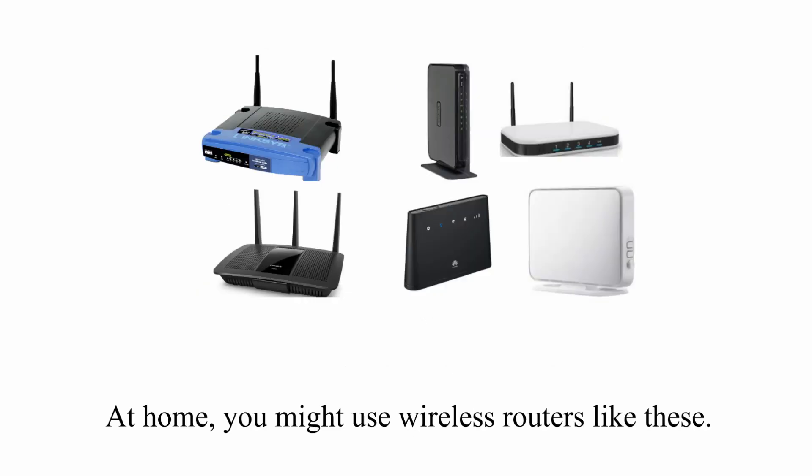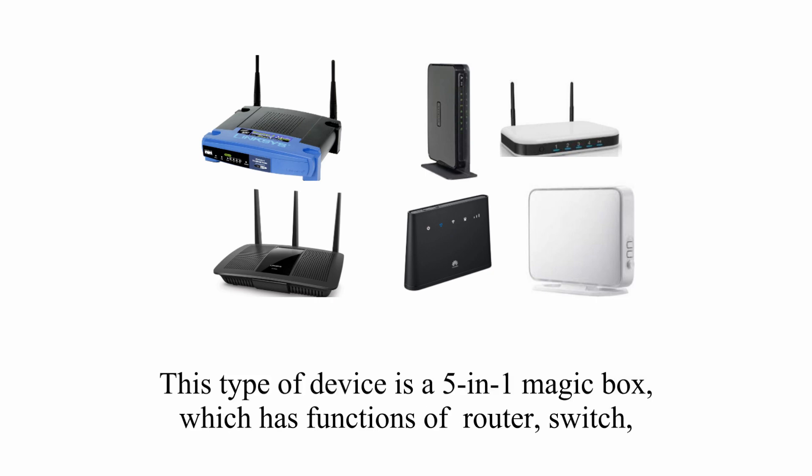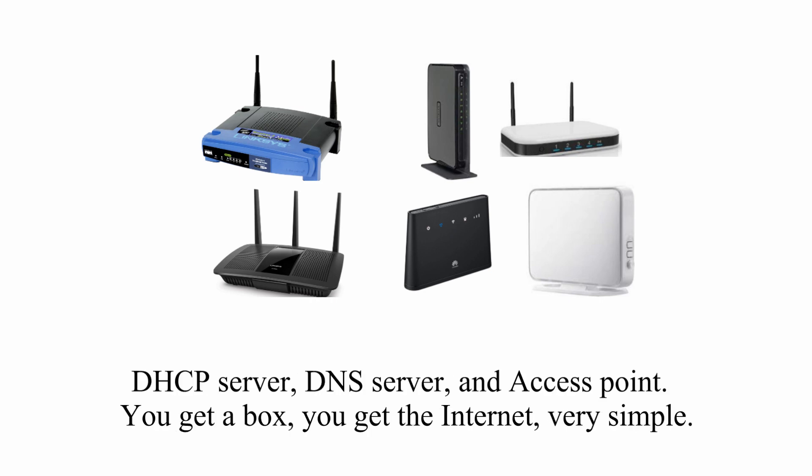At home, you might use wireless routers like this. This type of device is a 5-in-1 magic box which has the function of a router, switch, DHCP server, DNS server, and access point. You get a box and you get the internet. Very simple.